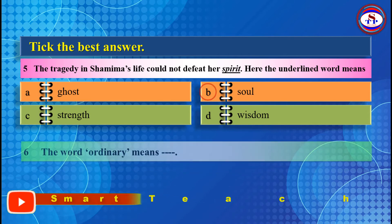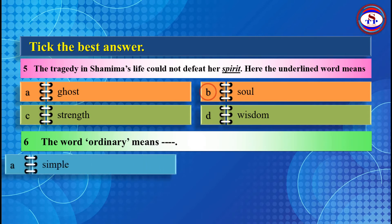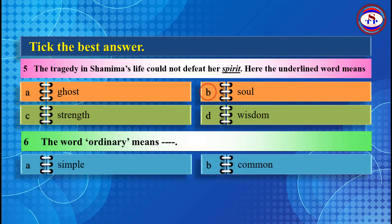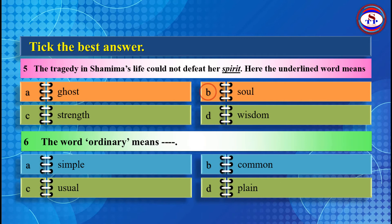Number 6: The word 'ordinary' means — Option A: Simple, Option B: Common, Option C: Usual, Option D: Plain. The best answer is Option B: Common.